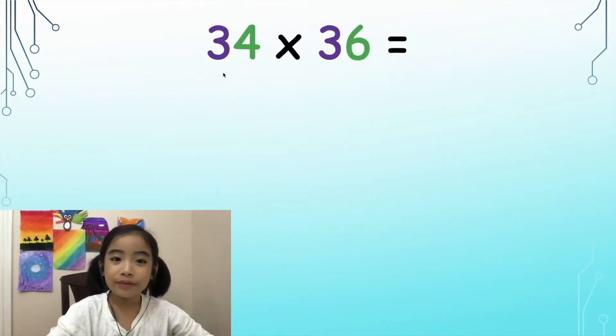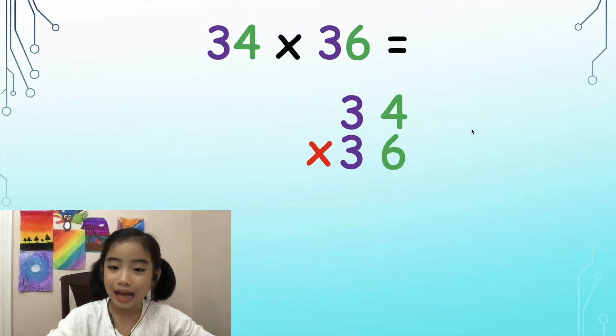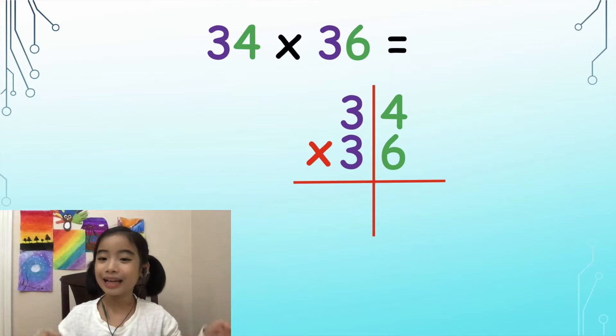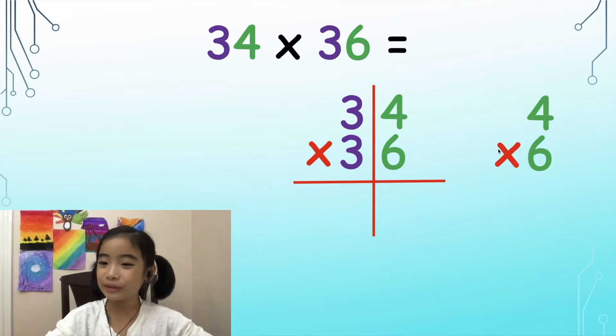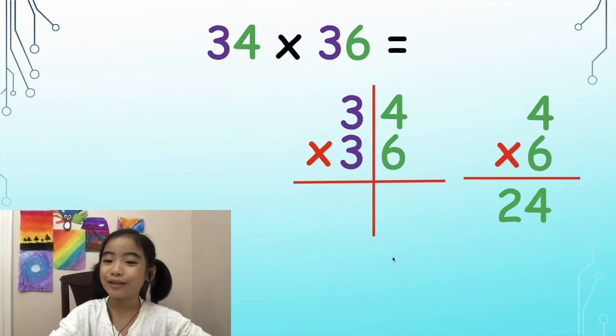Here we have 34 times 36. I'm going to split it in half. First, let's do the right side. 4 times 6 equals 24. Now, let's move on to the left side.